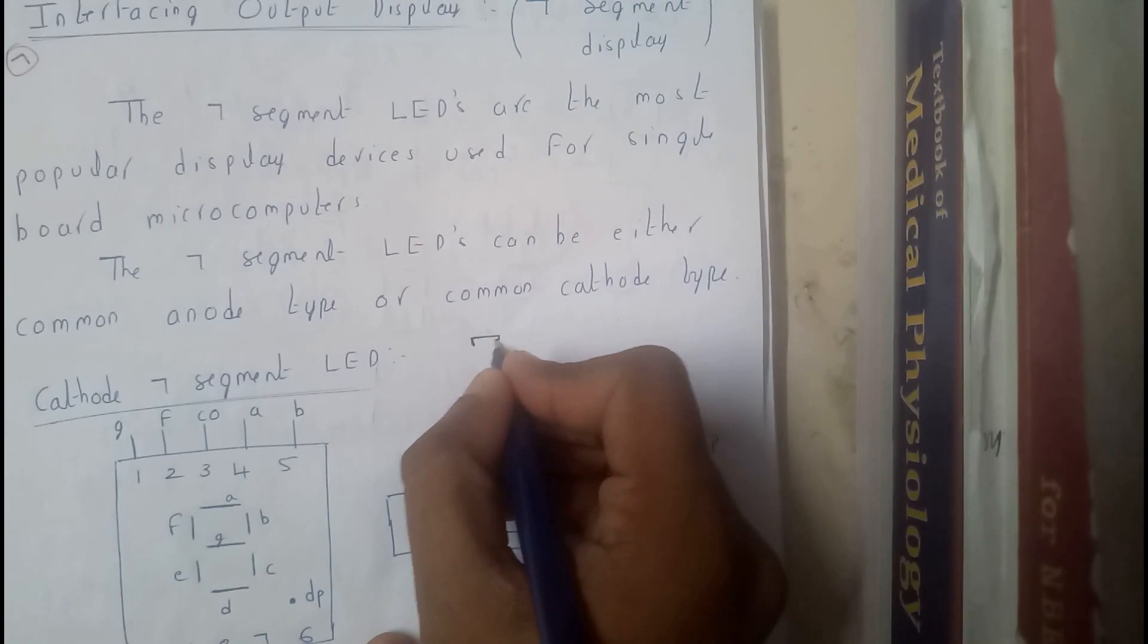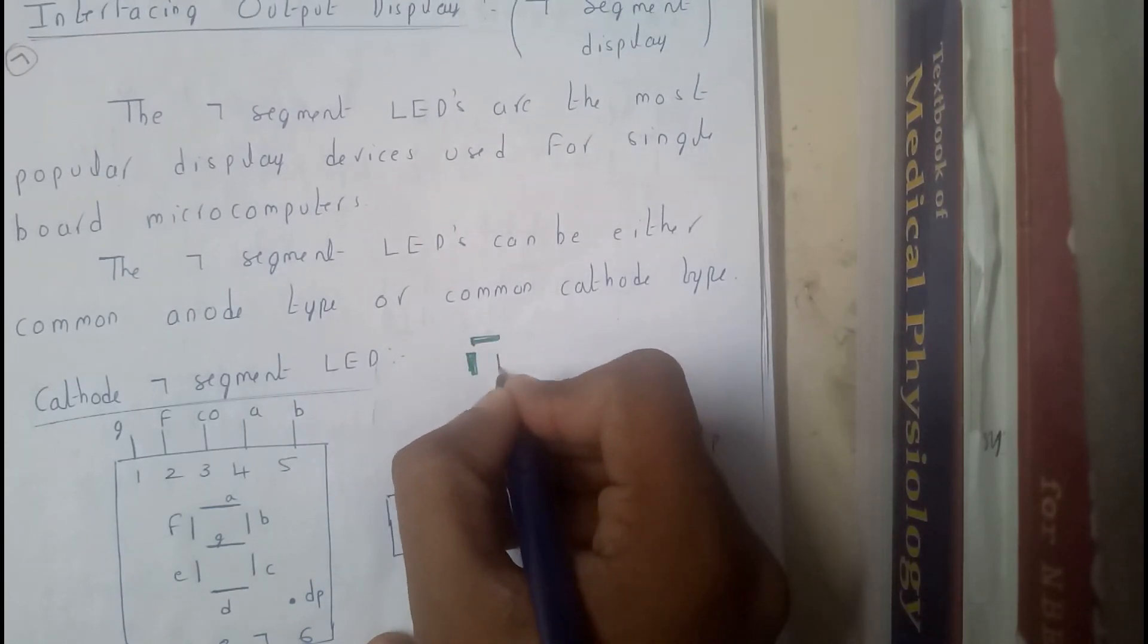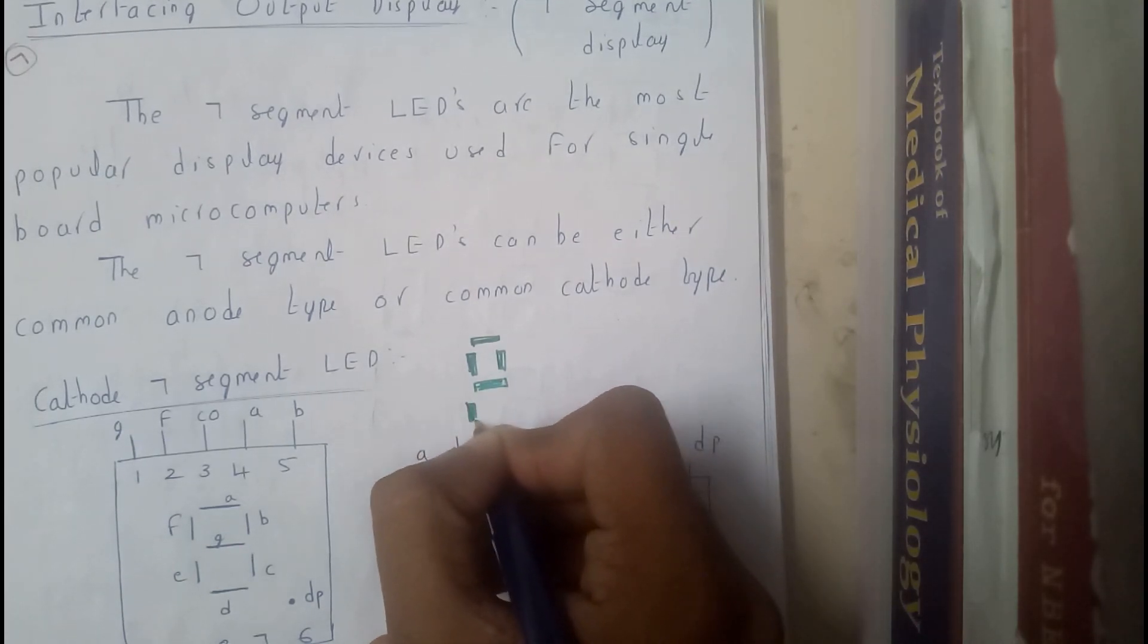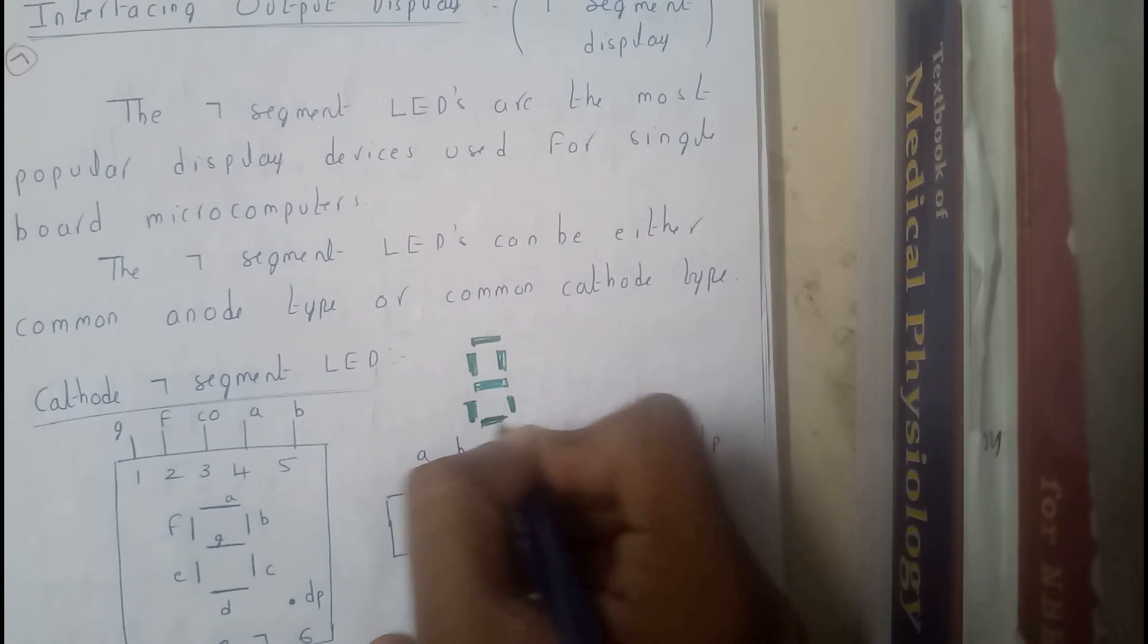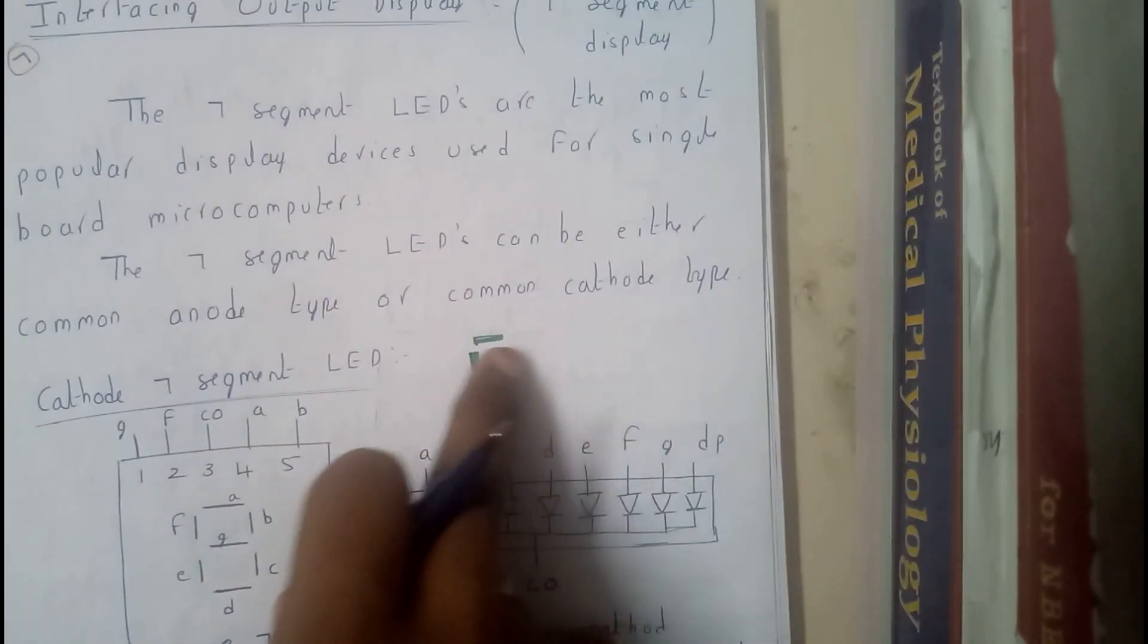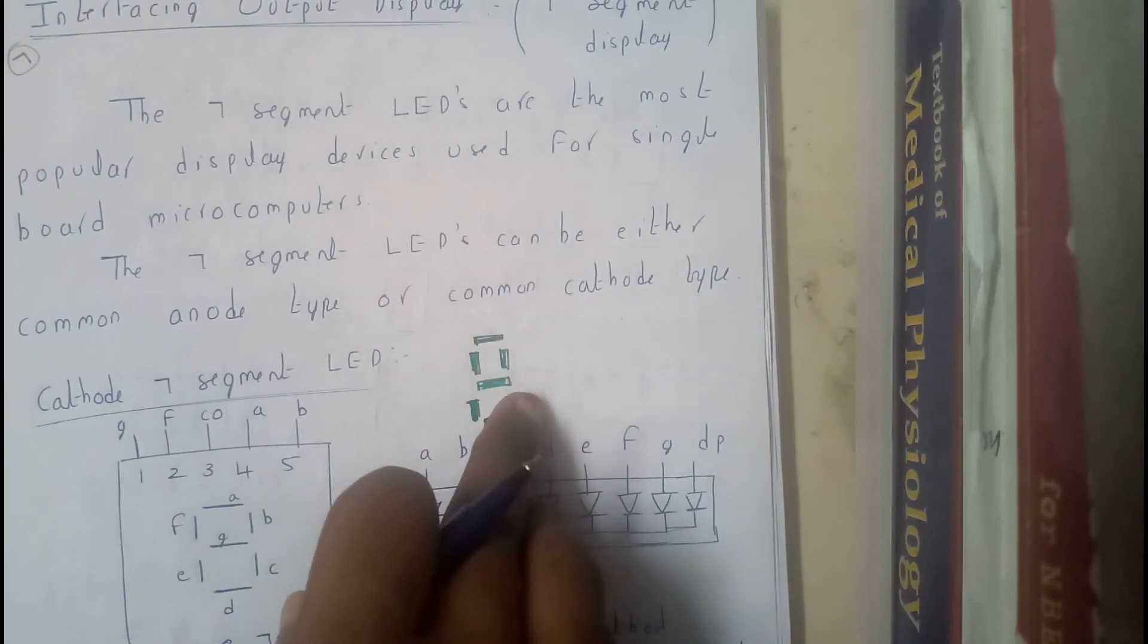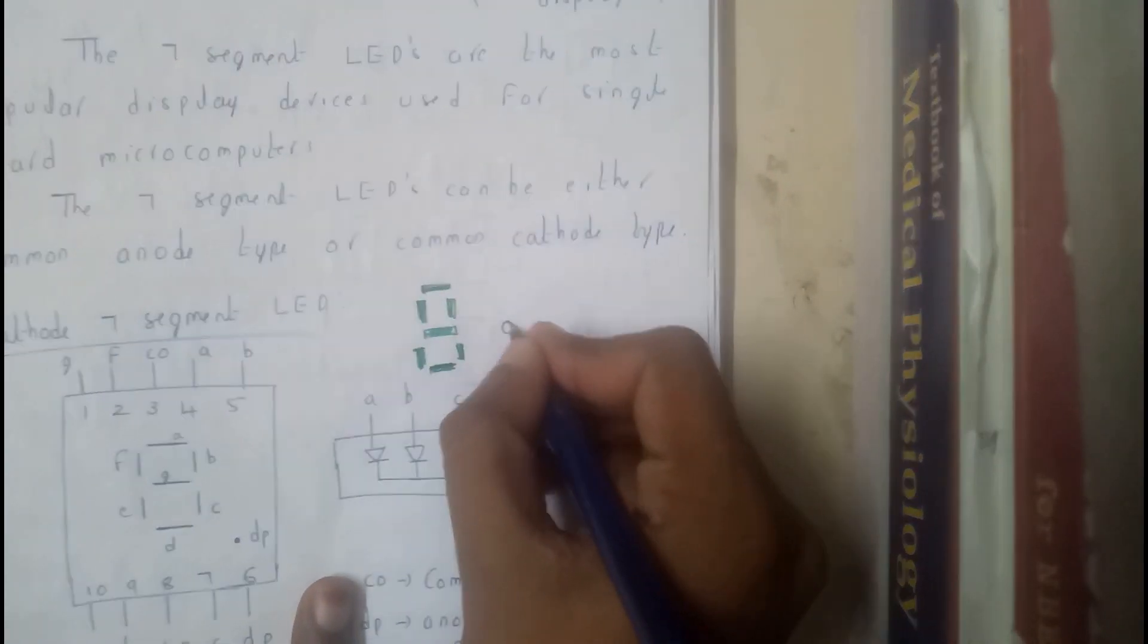When we are kids we used to wear those LED watches which indicates the number like this. It will be having some bars. I'll be just drawing you a rough diagram: four, five, six, and seven. There will be some bars like this. If all of them are on it shows it is eight. If only this one, two, three are on it shows seven.